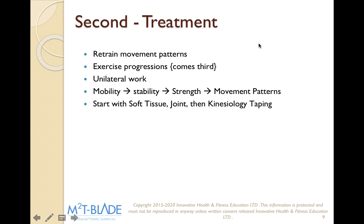When we look at instrument-assisted soft tissue mobilization, or IASTM, we always want to find out what's not moving and how we can make it move better. Once we find out what's not moving, we start with our soft tissue, treat the soft tissues, go to the joint, and then kinesiology tape.